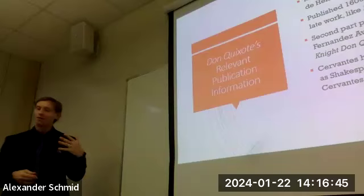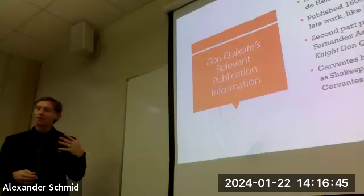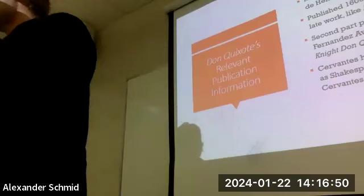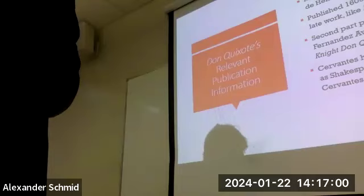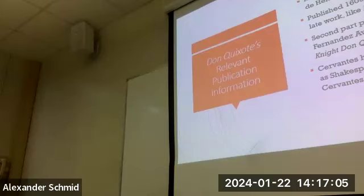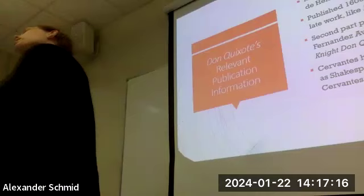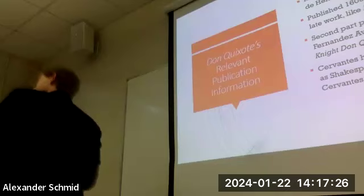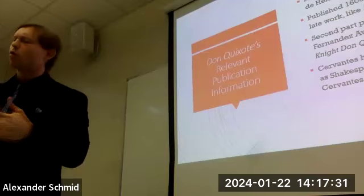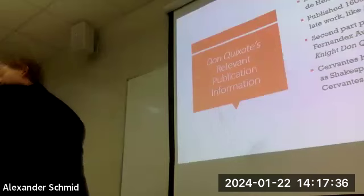Why did Cervantes wait ten years to write the second part? He wrote other works: the Exemplary Novels and one called La Galatea. Galatea comes from Greek mythology - a sculptor who created a figure of Aphrodite so beautiful that he fell in love with it, and his creation was brought to life. This shows the anxiety of being an artist: something particularly male artists attempt throughout literature - like an alchemist, like Faust in Goethe, or through science like in Mary Shelley's Frankenstein - trying to create life itself, to make a work of art that is truly living.